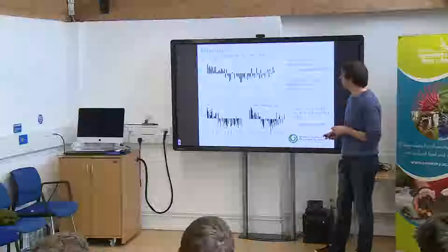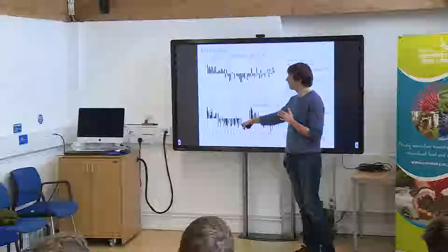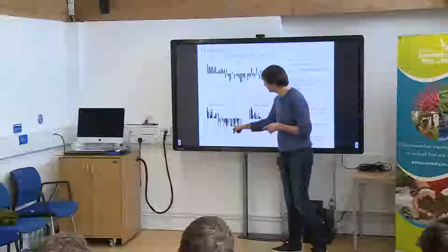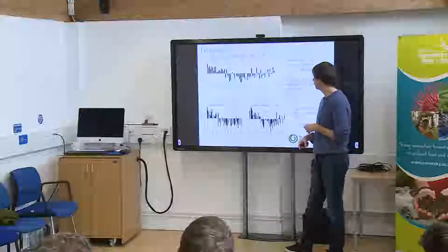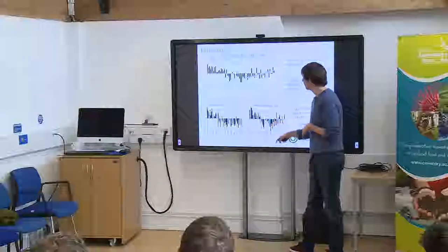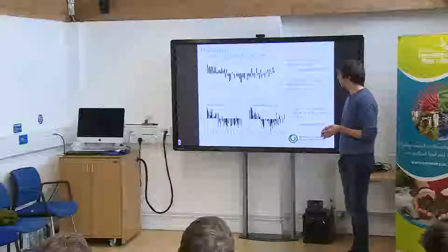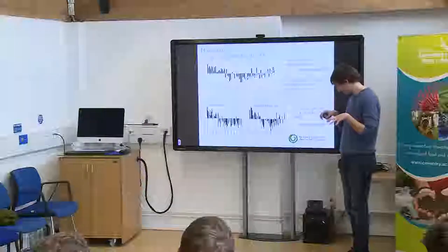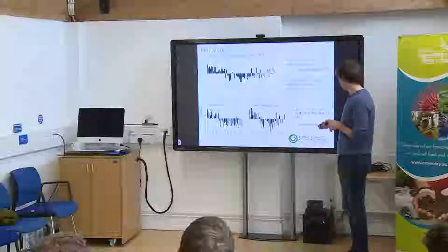If we split the Sahel into two boxes — looking at what is happening west of 10 degrees west — we can see there is no recovery at all over Senegal. But if we look eastward, between 0 and 10 degrees east, there is a recovery. So this recovery has a trend, but it's quite complex in terms of spatial patterns and timing.